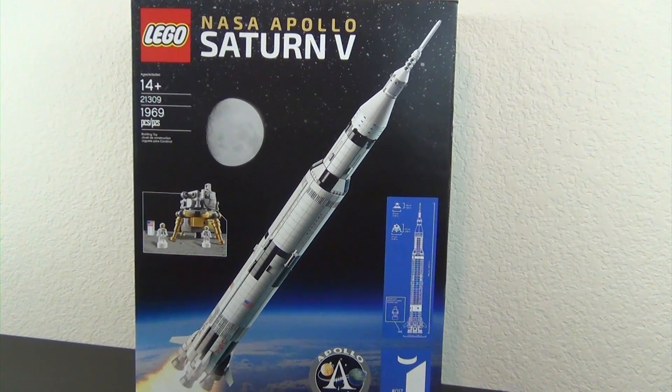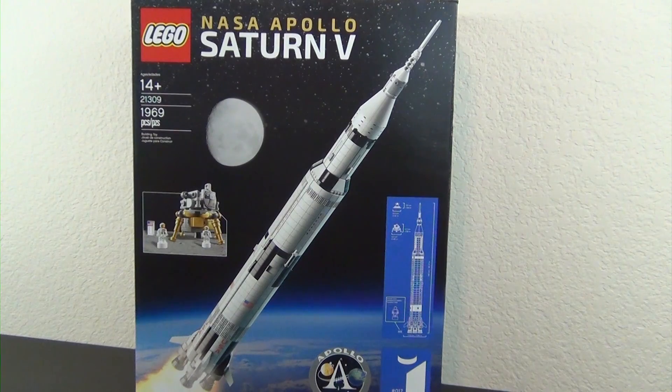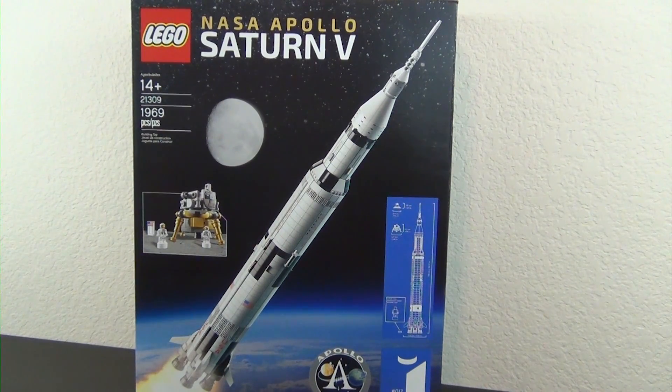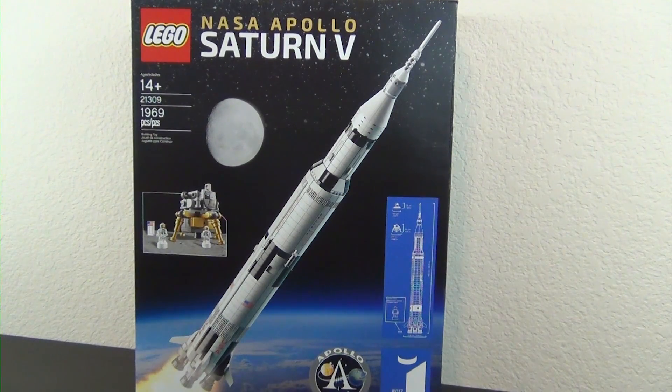Hey everyone, welcome back to the Hidden Brick where today we're doing part one of the build of the LEGO Ideas NASA Apollo Saturn V. This is set number 21309, 1969 pieces.